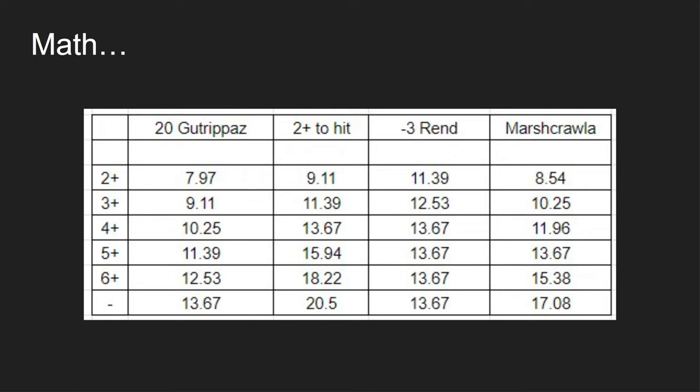And then we look over at the Marshcrawler Slogoth. And the Marshcrawler Slogoth has worse damage across the board because all we're doing is getting plus 1 to hit. You have to remember too, so here's fundamentally why these numbers work out the way that they do.